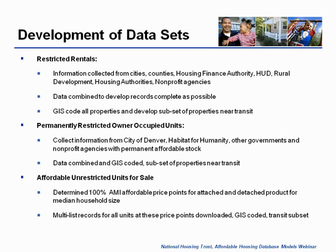The third data set we created was of affordable unrestricted units for sale — a snapshot of where affordable properties are in the metro area that are for sale. First, we determined the 100% AMI affordable price point in each county for both attached and detached products for our median household size. We were then able to download records from our multi-list service of properties at those price points, GIS code them, and create a transit subset.